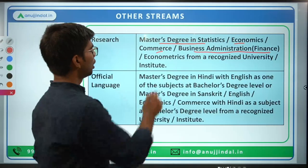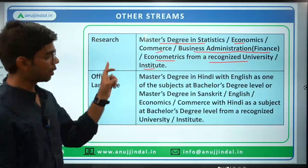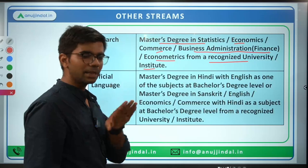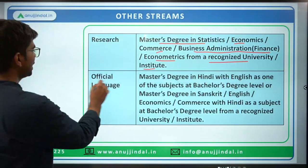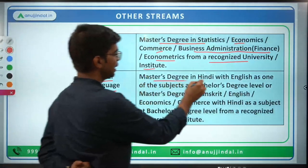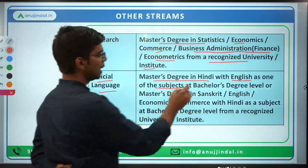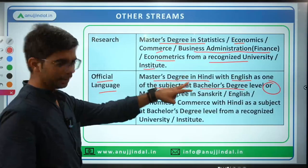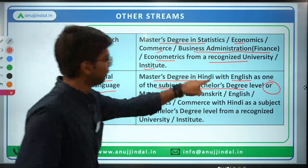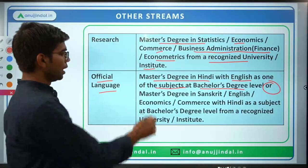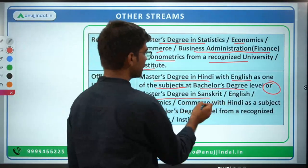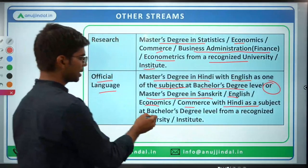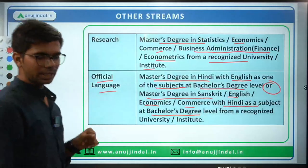For the Official Language stream, there are two options: first, a Master's degree in Hindi with English as one of the subjects at Bachelor's degree level; or second, a Master's degree in Sanskrit, English, Economics, or Commerce with Hindi as a subject at Bachelor's degree level.